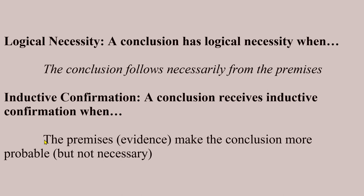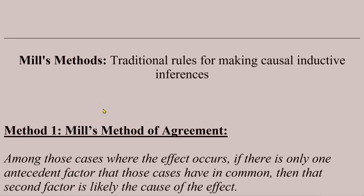in an inductive confirmation, make the conclusion more probable, but the evidence is not going to be sufficient to make the conclusion necessary. Mill's Methods then are traditional rules for making causal inductive inferences.